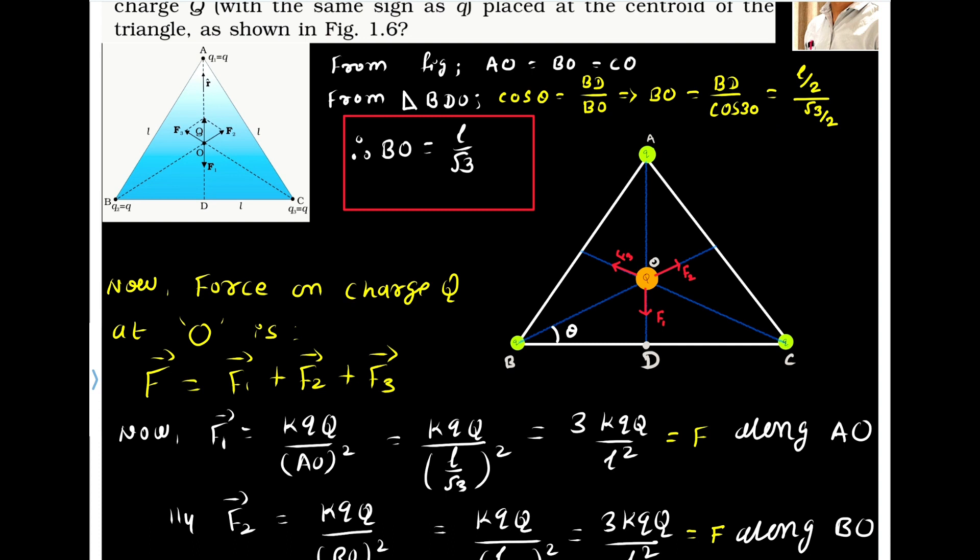Now let us try to find out the force on charge Q. So the force exerted by Q1 is given by equation KQQ by AO square. That is already we have discussed. Here on this charge, all these three charges are exerting force. So the total force acting is the vector sum of all these forces. So it is KQQ by AO square. This can be rewritten as KQQ and AO is nothing but L by root 3. So L by root 3 whole square. So this three will go up. So it is 3KQQ by L square. Let us call this force as capital F and the direction of this force is along A to O. So F1 is directed along AO.